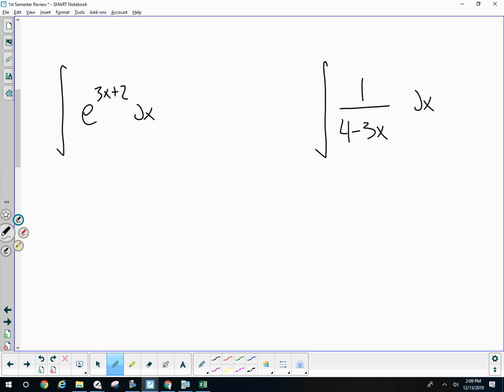So some examples of that are like e to a power. The antiderivative would be e to the power. But then don't forget to multiply by the reciprocal of the coefficient of x. Here the antiderivative of 1 over 4 minus 3x is going to be, this is like stuff to the negative first power.